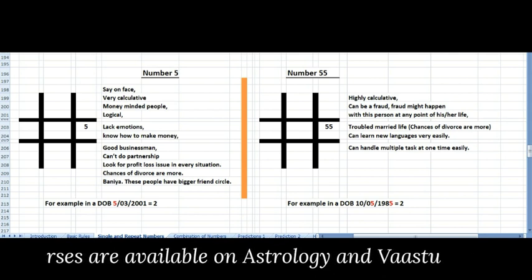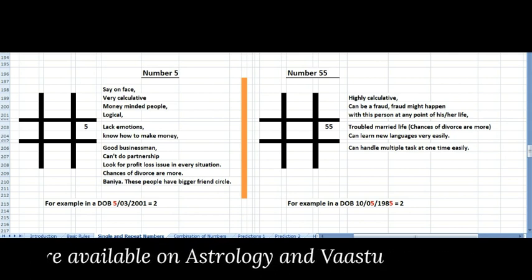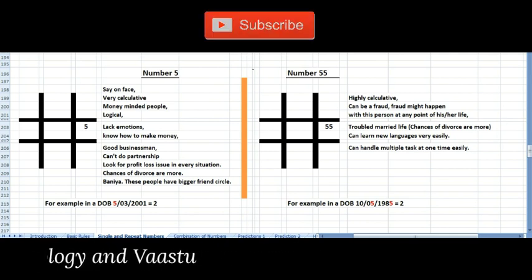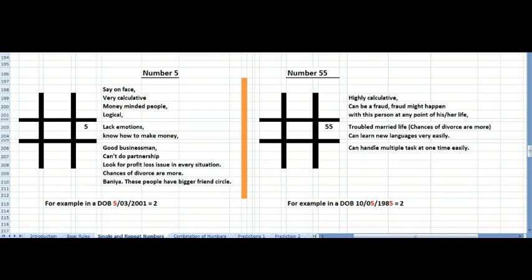They know from where the money will come. They are very good businessmen. They can't do partnership with everyone - it's difficult for them to do partnership. They look for profit and loss in every situation.